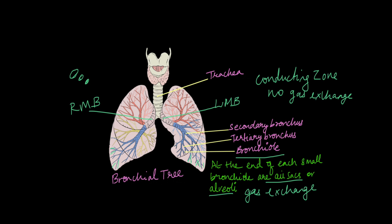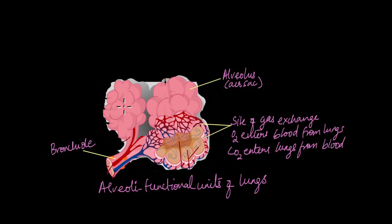Let's take a look at how alveoli look like. So alveoli are the functional units of lungs. It is exactly the location where gas exchange, that is, oxygen and carbon dioxide are exchanged between the air and the blood in the lungs.